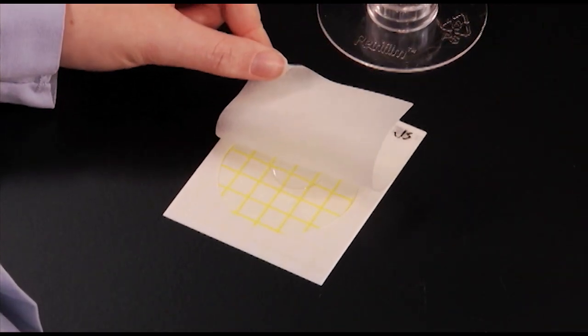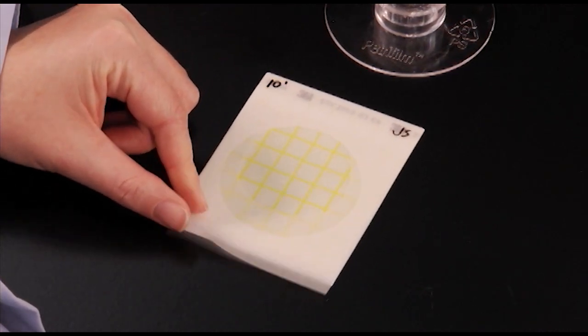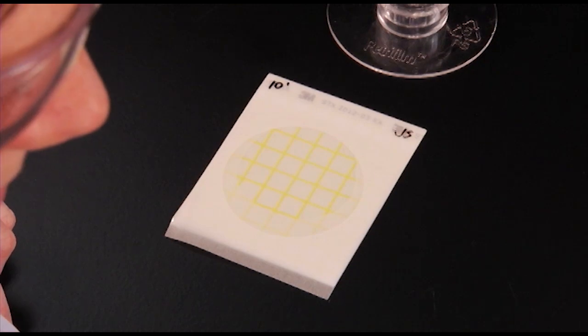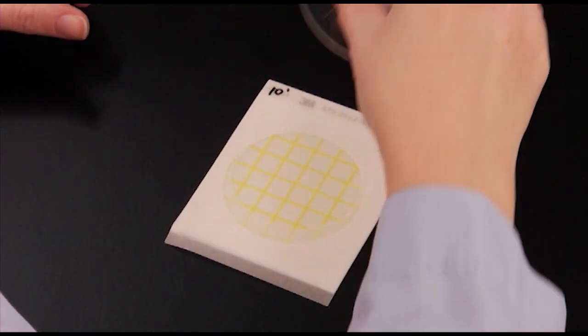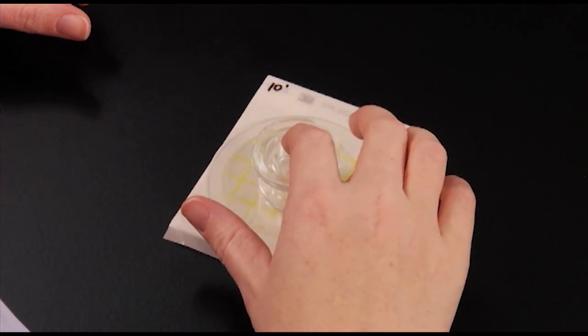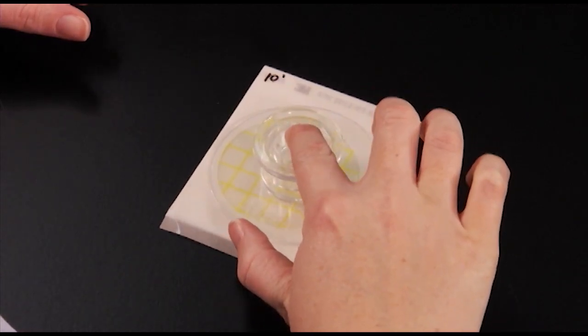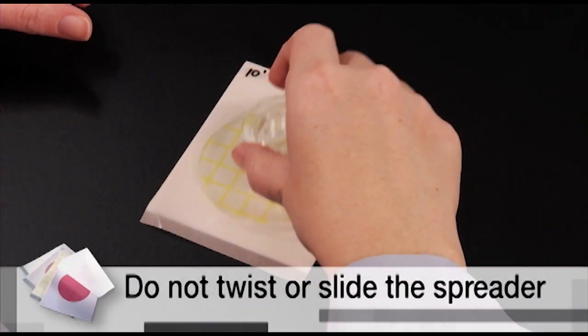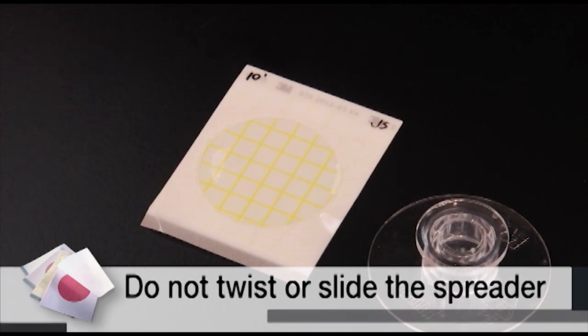Carefully roll the top film down to avoid entrapping air bubbles. Pick up the appropriate spreader with the flat side down and place it on top of the film, over the inoculum. Then, gently apply pressure on the center of the spreader to distribute the inoculum over the entire circular area. Do not twist or slide the spreader. Lift the spreader and allow 1 minute for the gel to form.